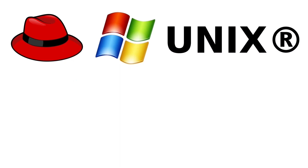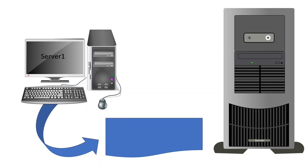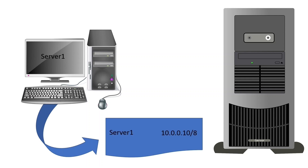All operating systems include a file called hosts. You can use this file to map IP addresses and names. Each time you access a network resource, the operating system checks this file to find the corresponding IP address.